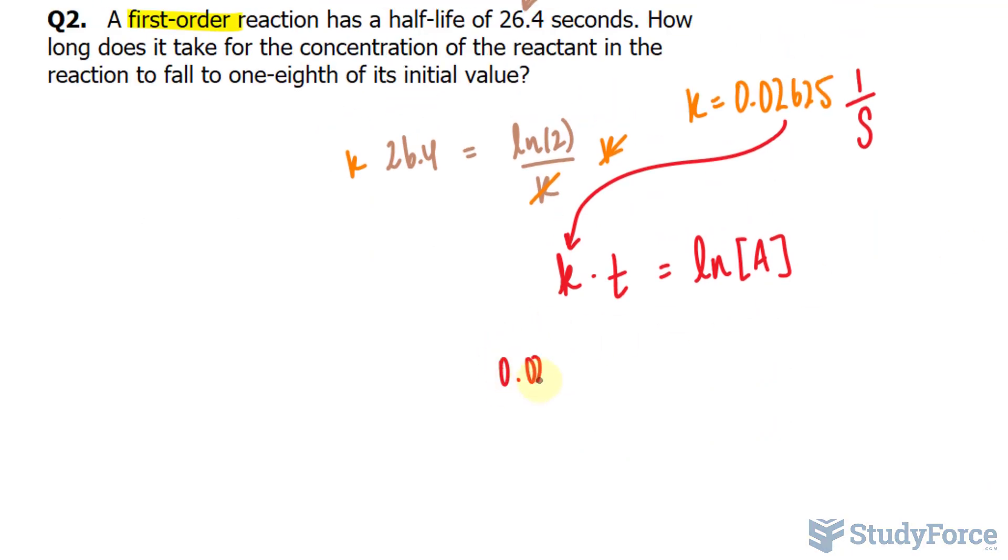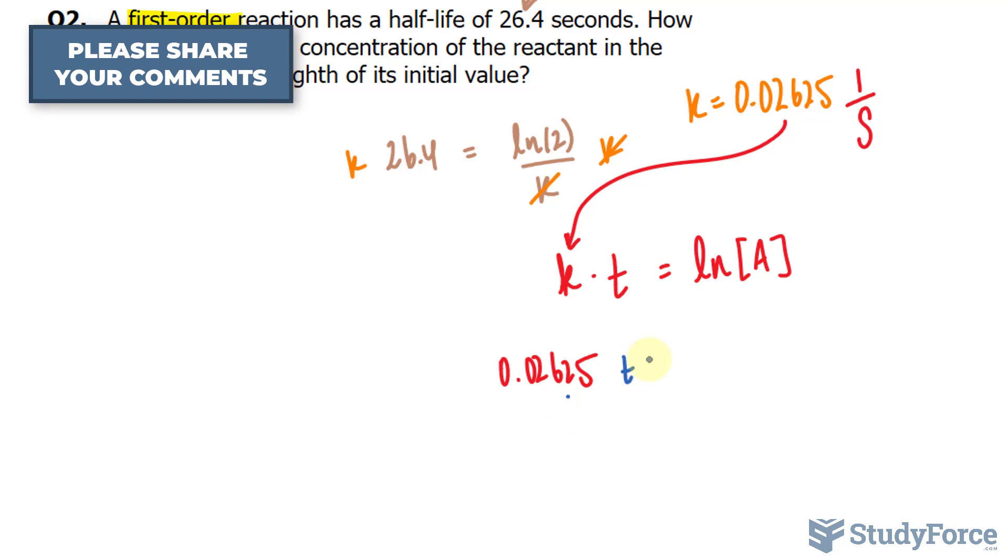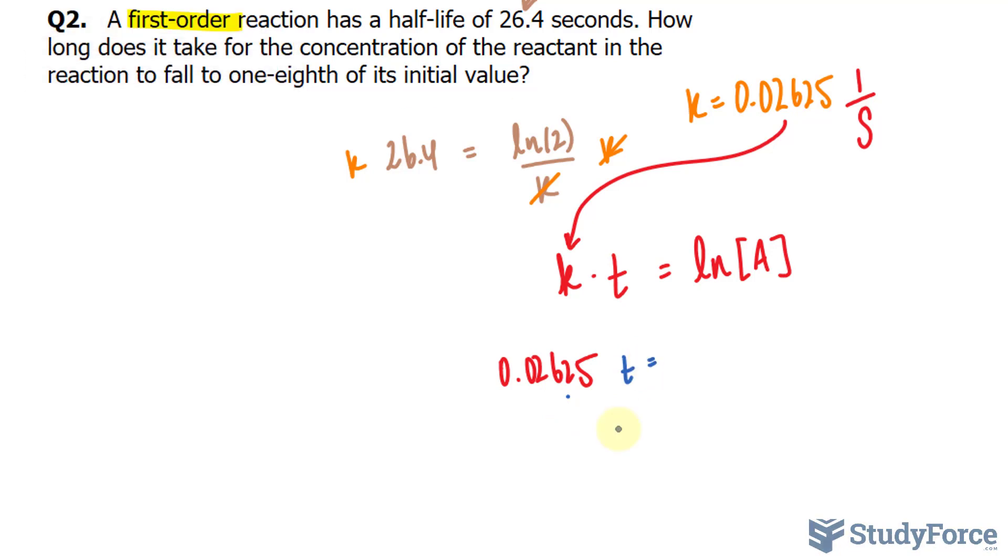So let me substitute what we have currently. We have 0.02625 and I know that this number should be to three significant figures. And we want to know the time that it takes the original concentration to become one-eighth of its initial value. So I'll replace A with one-over-eighth. So we assume that the initial value is one and by replacing A with one-over-eighth, that represents its final.